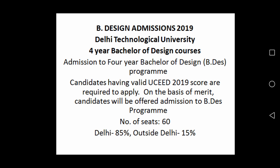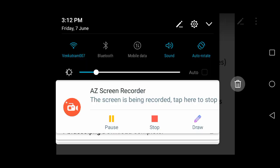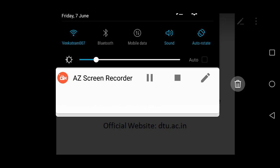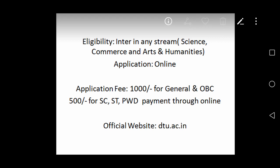Total number of seats: 60 — Delhi 85 percent, outside Delhi 15 percent. Eligibility for this is intermediate in any stream: Science, Commerce, and Arts and Humanities.